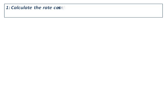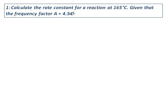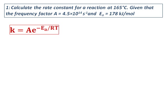Calculate the rate constant for a reaction at 165°C, given that the frequency factor A equals 4.5 × 10^14 s^-1 and Ea is 178 kJ/mol. This is a question where the rate constant's dependence on temperature is given, so we use the Arrhenius equation.